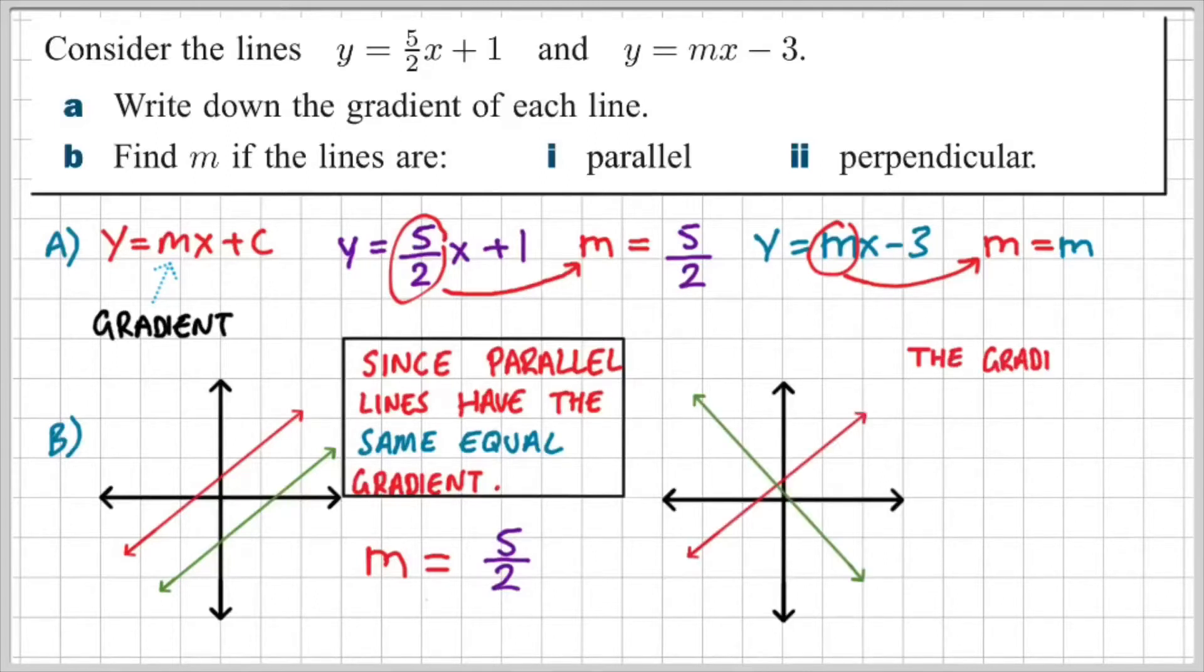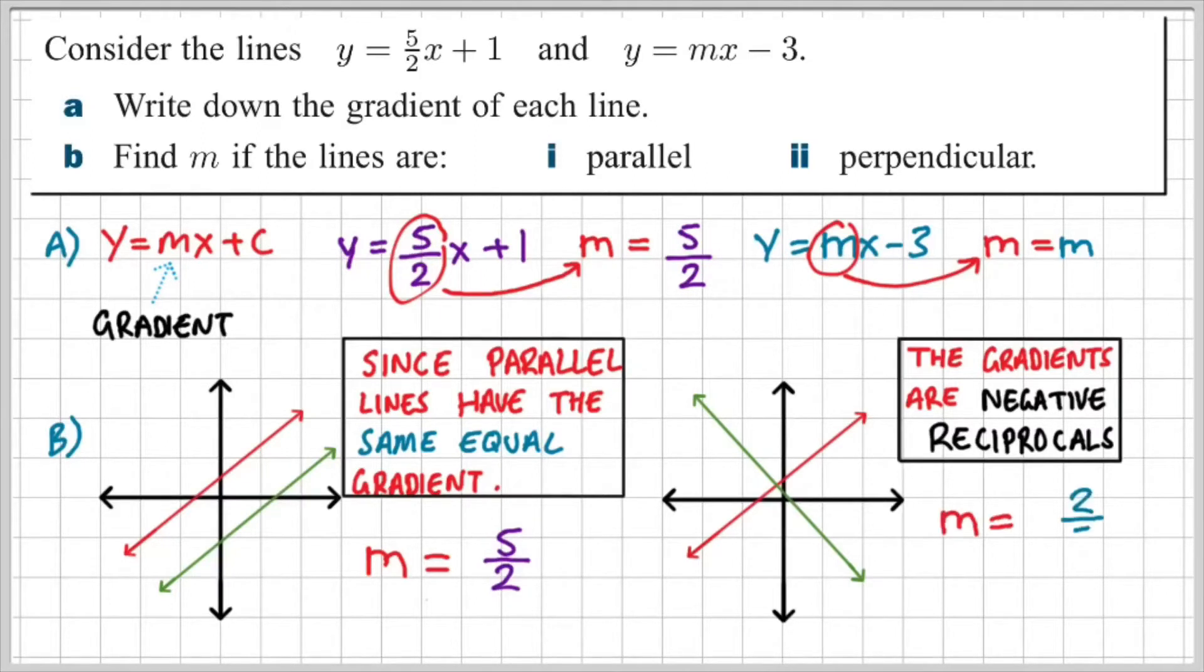Now for perpendicular lines, we learned from the previous slide that they intersect at 90 degrees and that the gradients are negative reciprocals. So if the original gradient is five over two, the negative reciprocal would be negative two over five. That would be the gradient for the perpendicular line.